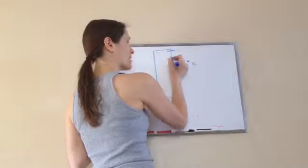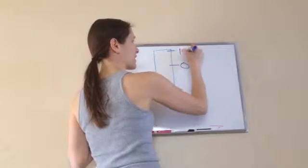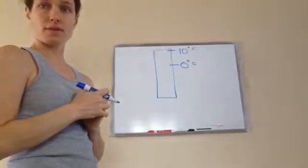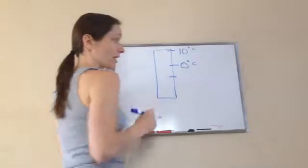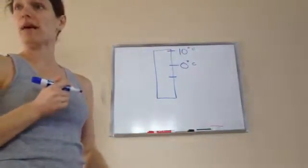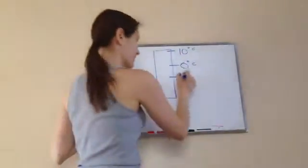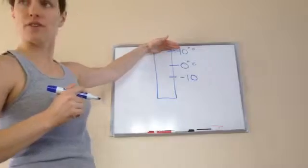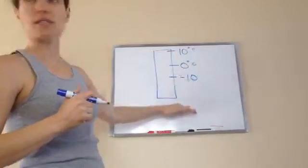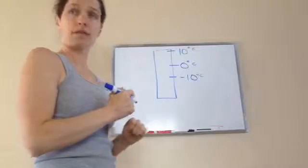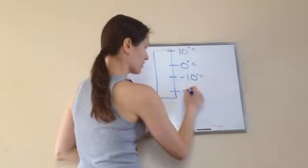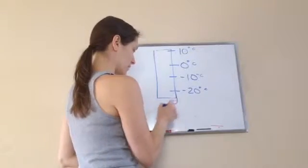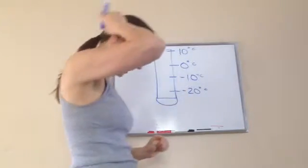Instead of putting a bunch of ticks I'm just gonna go up 10 degrees each time. Now I'm gonna go 10 degrees under zero. What would that be? Negative 10. I went 10 degrees above, now I'm going 10 degrees under. If I go 10 more degrees under it'd be negative 20 degrees Celsius.